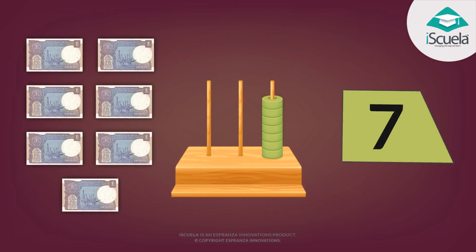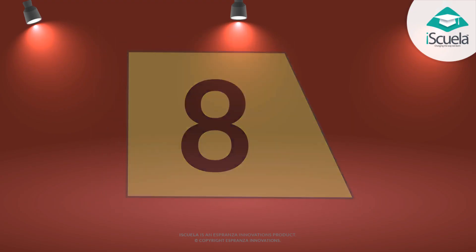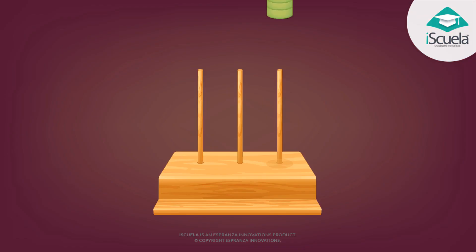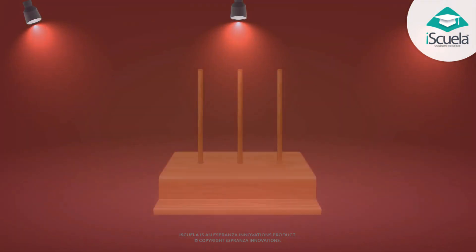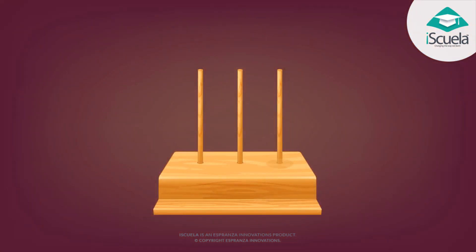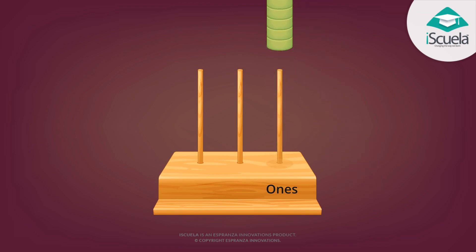Eight rupees, eight beads: eight. Nine rupees, nine beads: nine. Good children! We can put only nine beads in one stick of the abacus. The stick in which we have put nine beads is the stick for the place value of ones — what we call the ones place. We can put only nine beads in one stick.